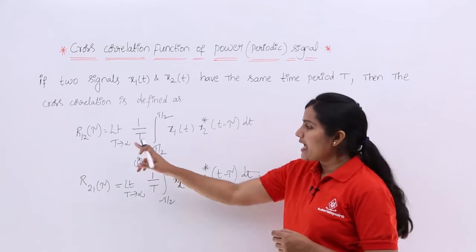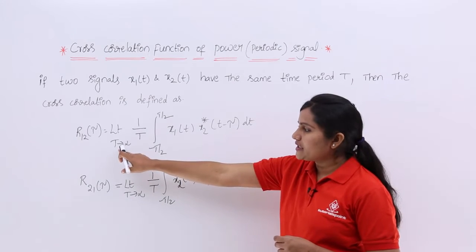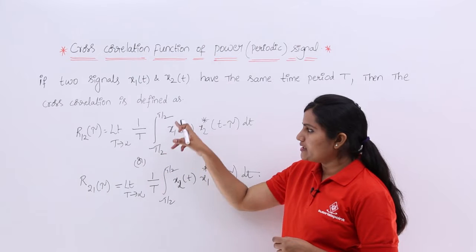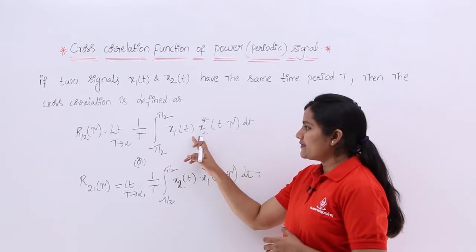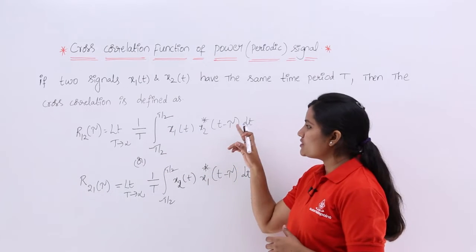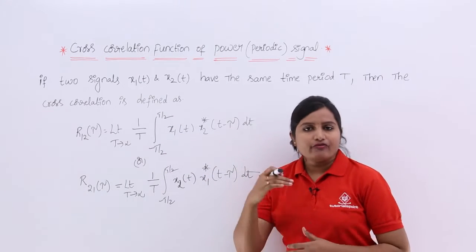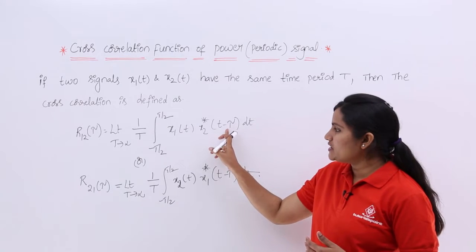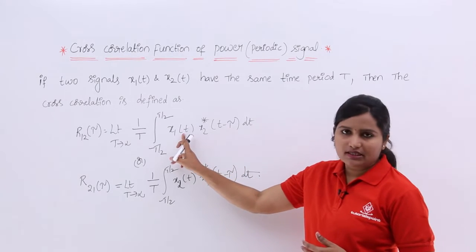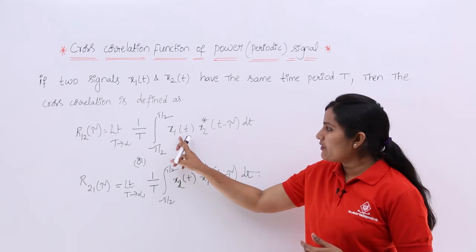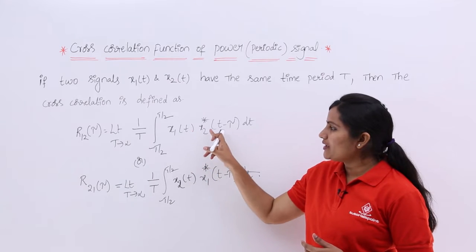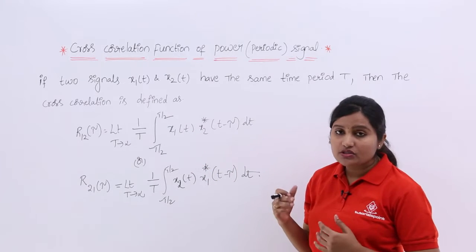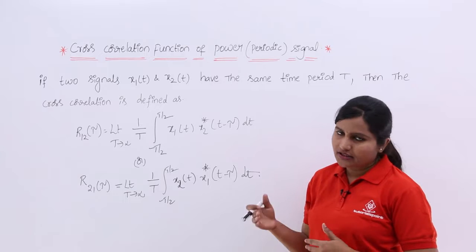Since we already consider the limit T tending to infinity, we use minus T/2 to T/2 as the integration limits: x1(t) · x2*(t − τ) dt. We can also form another equation by shifting differently, writing x1(t − τ) · x2*(t) dt.